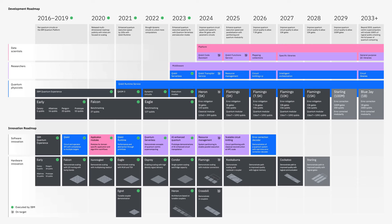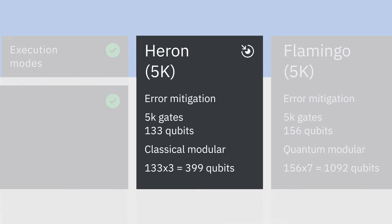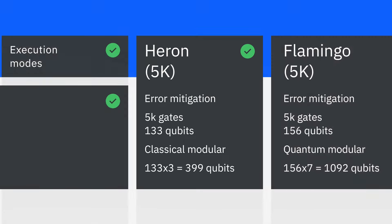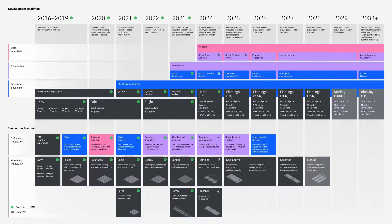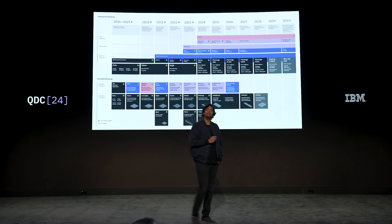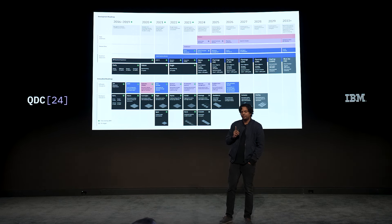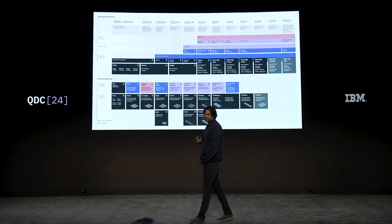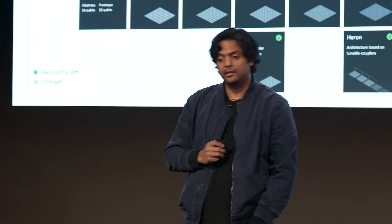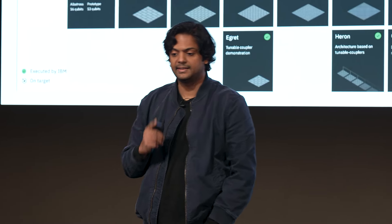With that, we can check off the first box on our roadmap. Last year we promised to deploy a 156-qubit Heron processor capable of accurately running circuits with at least 5,000 gates in 2024, and we've done that. We also need performing tools to program those quantum computers, and now I'd like to hand off to Heather, who will talk about how we're accelerating scientific discovery with high-performing quantum computing software.